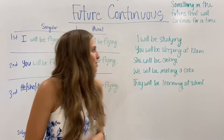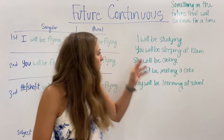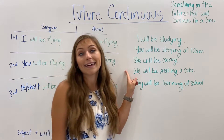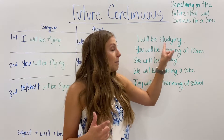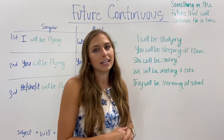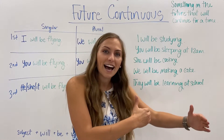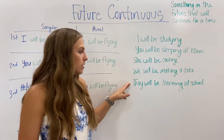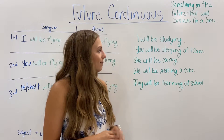Here are some examples: "I will be studying tomorrow at that time." "You will be sleeping at 12 a.m." "She will be cooking." "We will be making a cake." "They will be learning at school." All of these are good because they are active verbs that can continue over time — you cannot just learn in one moment, you learn over time, you make a cake over time, you cook over time. You can see: subject, then "will," then "be," then the "-ing" verb.